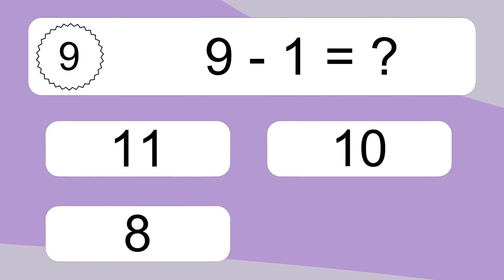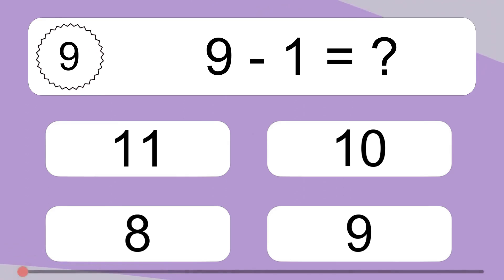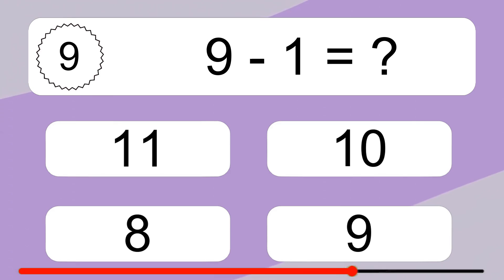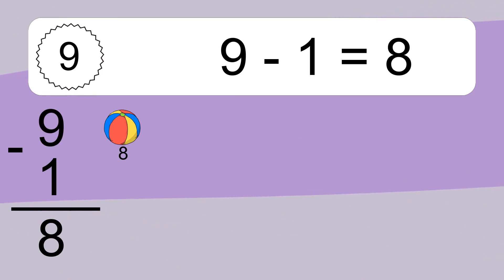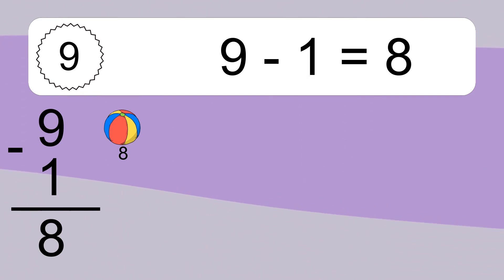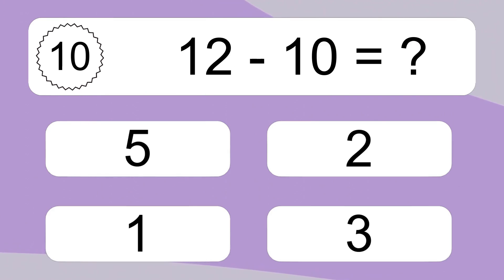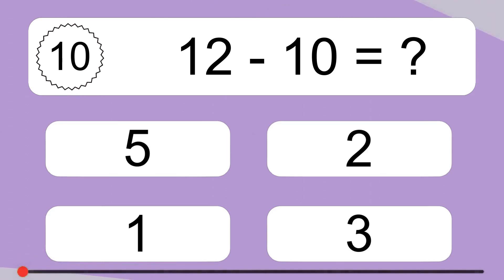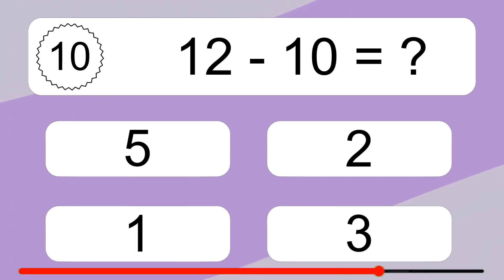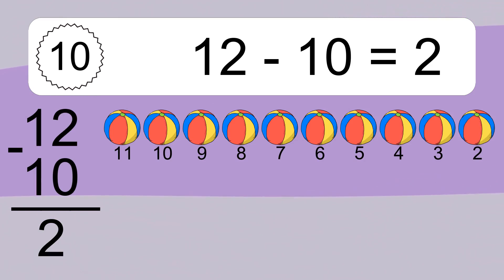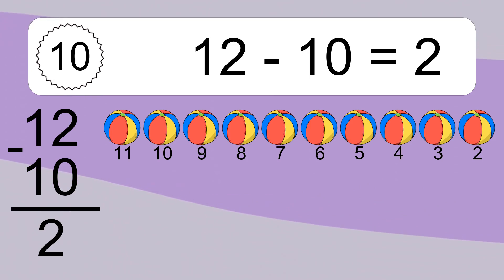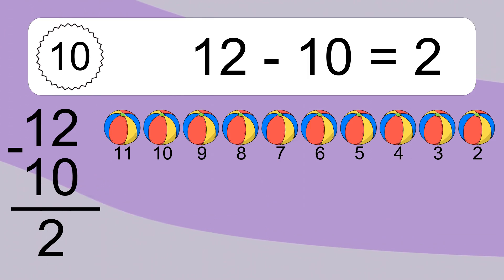Nine minus one equals what? Nine minus one equals eight. Let's count it: eight. Twelve minus ten equals what? Twelve minus ten equals two. Let's count it: eleven, ten, nine, eight, seven, six, five, four, three, two.